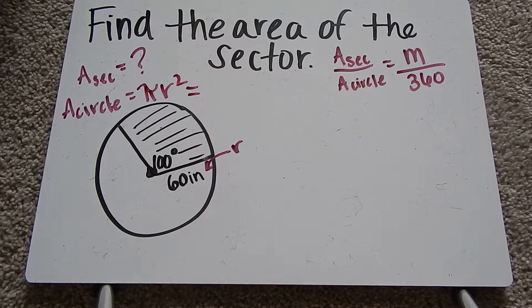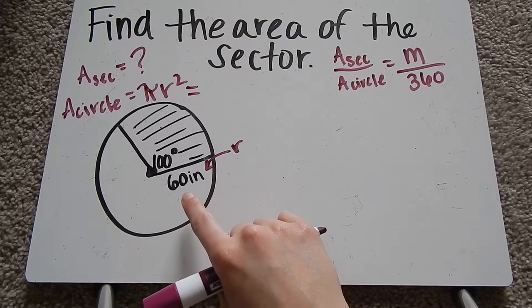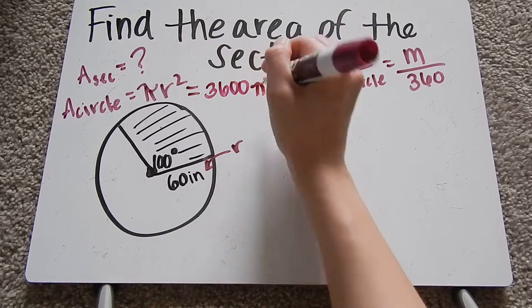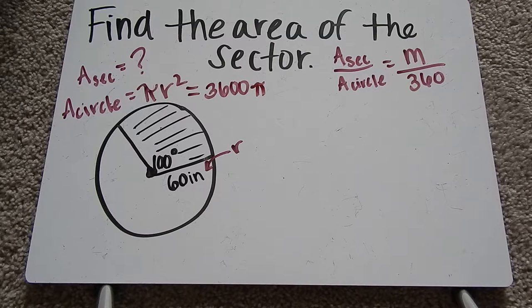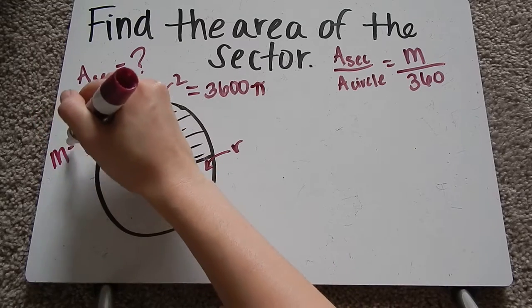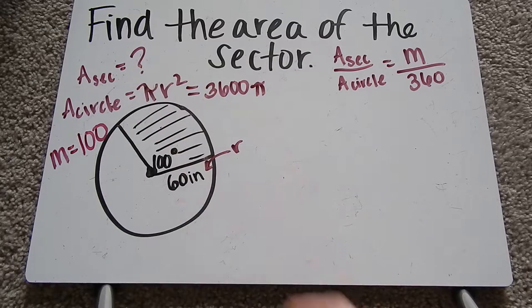So all we have to do is square our radius and then we can find our area of the circle. 60 squared is 3600. Stick that π on there. So that's our area of the circle, and then M is our central angle measure, which here it's 100 degrees. So that's going to be 100.